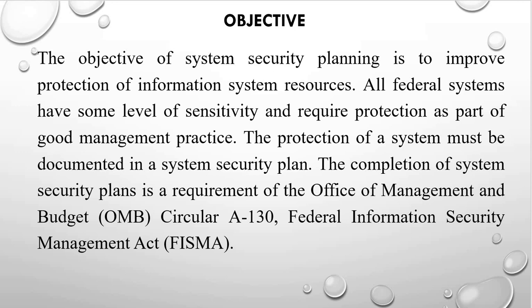The objective of a system security plan is to improve protection of information system resources, which means all federal systems have some level of sensitivity and require protection as part of good management practice. The protection of a system must be documented in a system security plan. The completion of the system security plan is a requirement by OMB Circular A-130, meaning every system in every government agency must be protected and that protection has to be documented in the system security plan.